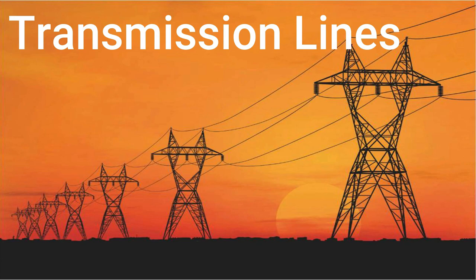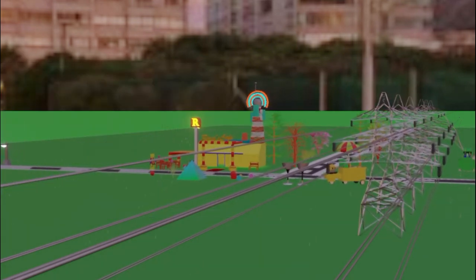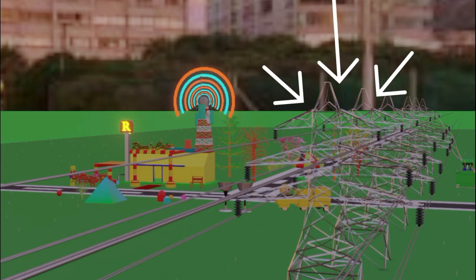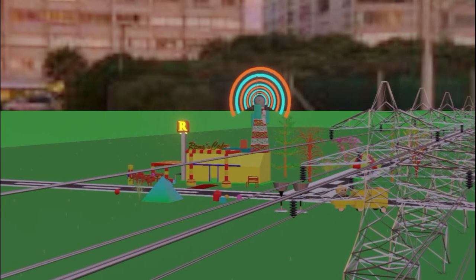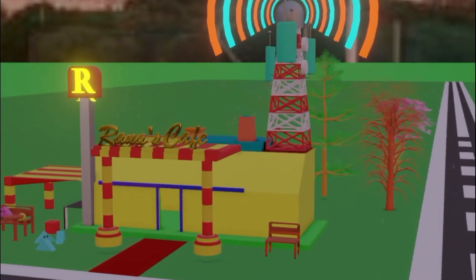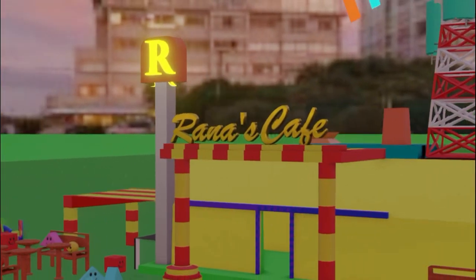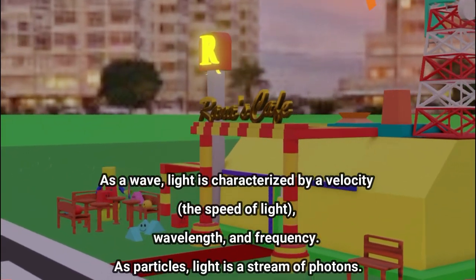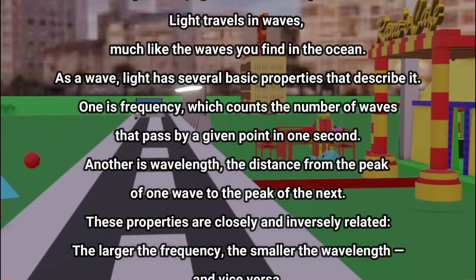Let us briefly discuss transmission lines, which are an application of electromagnetic waves. A transmission line is a cable designed to conduct electromagnetic waves in a contained manner. These lines are used for the transmission of electrical power from generating substations to various distribution units, transmitting waves of voltage and current from one end to another. In the next session, we will continue with types of waves, differences between circuit and field theory, and more applications of electromagnetic fields.